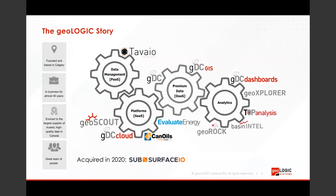Geologic has been around and based in Calgary for over 30 years. We have a variety of different products, such as GeoScout, which is a platform used in the Western Canadian Basin. We also have a premium data service called GDC. Geologic acquired Subsurface I.O. in 2020, and it is now part of the data management or PaaS system that Geologic is offering. The platform is called Tavaio, and it's an enterprise system that can be installed behind operators' firewalls.